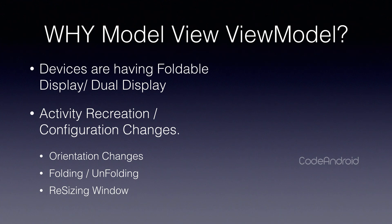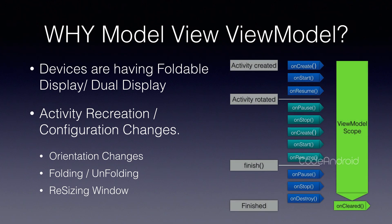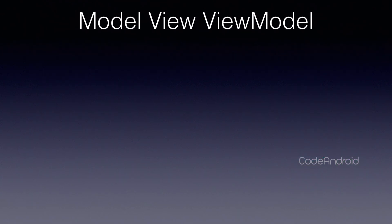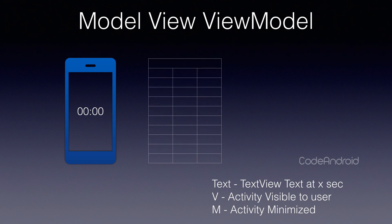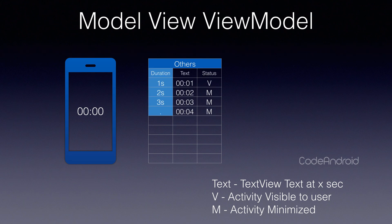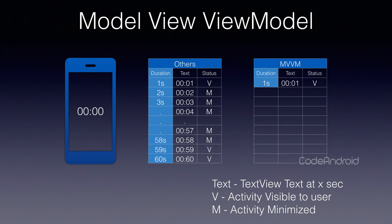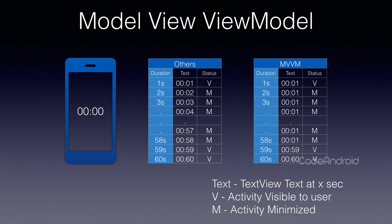Now we are getting devices with dual displays and foldable displays. In these kinds of devices, the activity will get recreated frequently due to configuration changes. By using ViewModel, we can overcome the problem of configuration changes. Also, it will block updating the UI when the view is not visible to the user. For example, if we create a timer application, we will update the UI every second. When the app is minimized, we don't need to update the UI because the changes can't be seen by the user. To handle that in other patterns, we need to introduce some booleans. But in MVVM pattern, the ViewModel triggers the observer only when the activity or fragment is visible to the user.